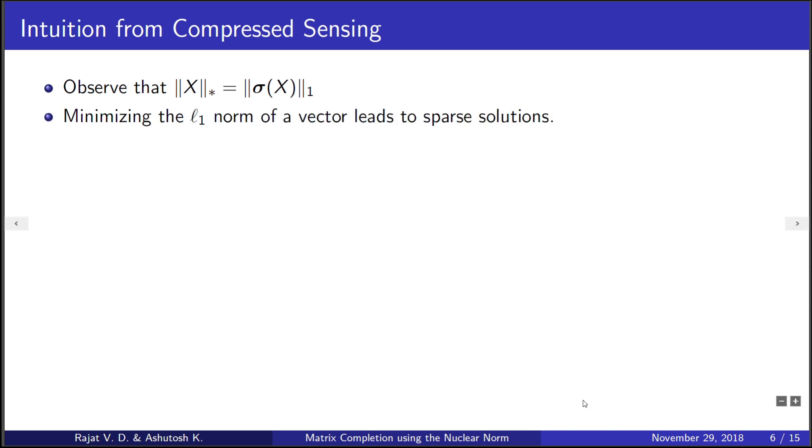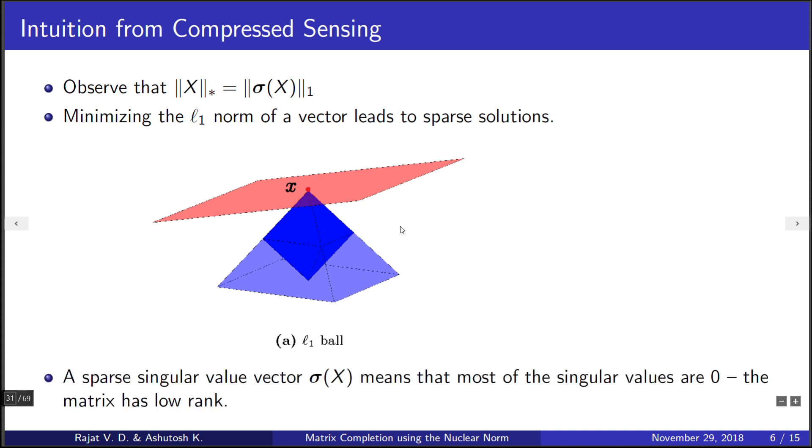We can geometrically see this as expanding the L1 norm ball, which is pyramidal in shape, until it hits some constraint. The point of intersection would lie on the coordinate axis most of the time, and those points are sparse. A sparse set of singular values means that most of them are zero, so the matrix has low rank.